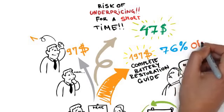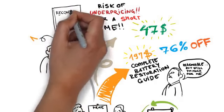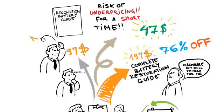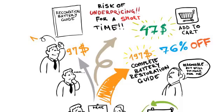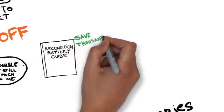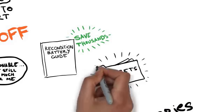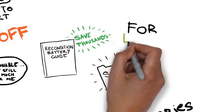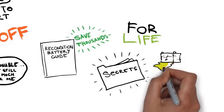So at the risk of underpricing our reconditioning plans, for a short time only, we are selling the reconditioned battery guide with the free battery business guide for a tiny one-time cost of just $47. I realize this is a huge 76% discount, but it's what we feel is right. So for a limited time, claim your copy of reconditioned battery at the discounted price of just $47 by clicking the Add to Cart button below this video. Honestly, this guide will save you thousands of dollars because once you have this guide, you can use the information for life. So whenever you have a battery that's on its way out, use this guide to bring it back to life.